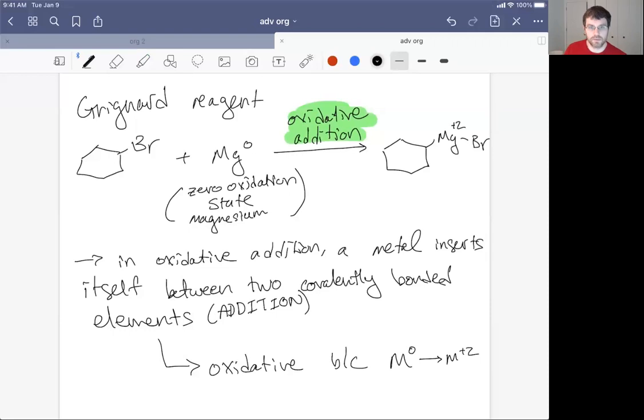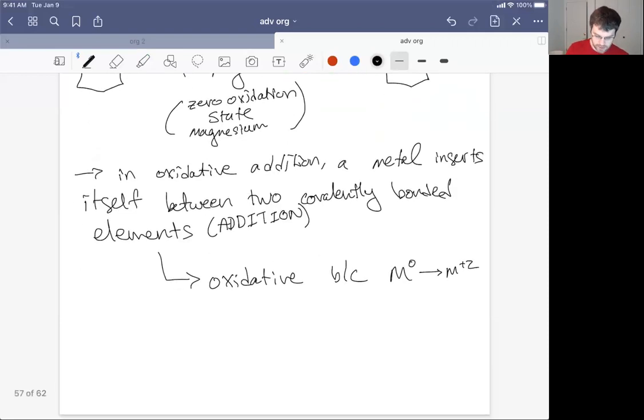So a fairly popular one is to look at palladium zero plus H2. So we use this exact process to do what's called hydrogenation of alkenes, converting an alkene into an alkane. So we used palladium on carbon for that, but palladium on carbon is just palladium zero.